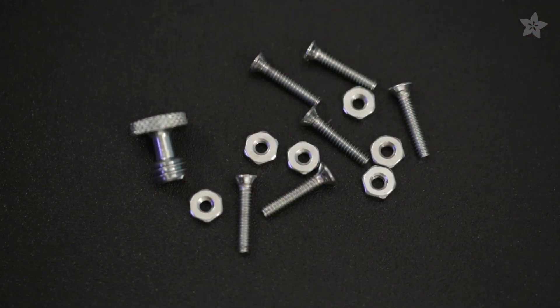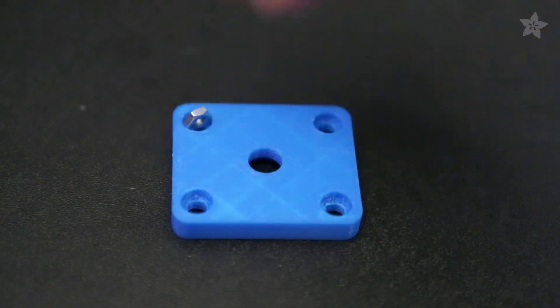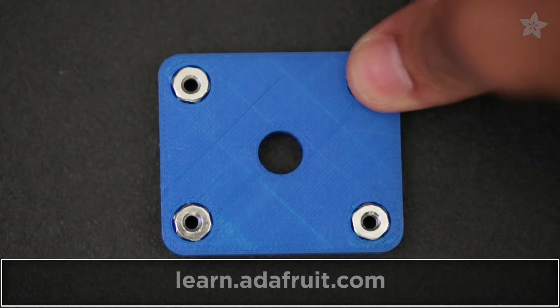A set of machine screws secures the 3D printed parts to the railing and platform. Get the parts and files for this project on the Adafruit learning system.